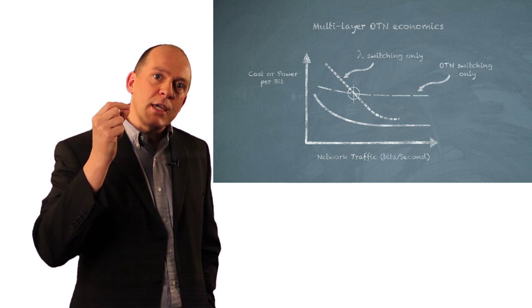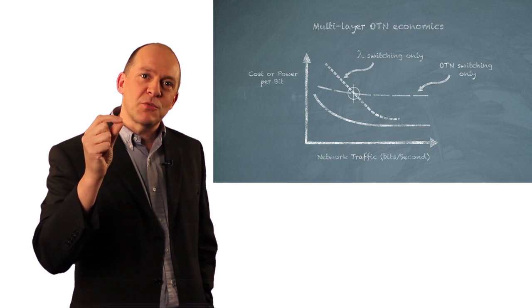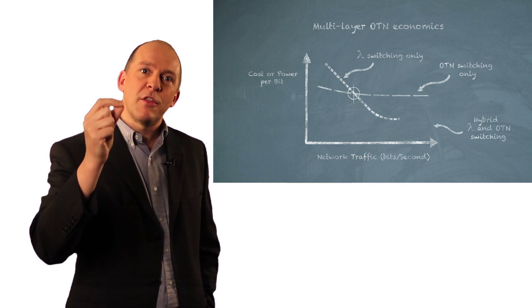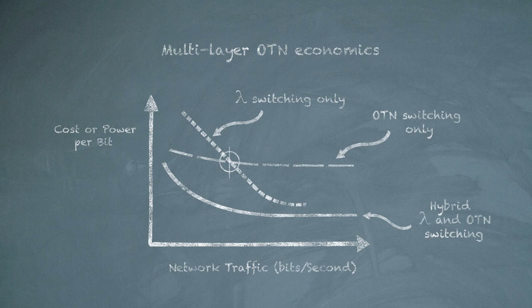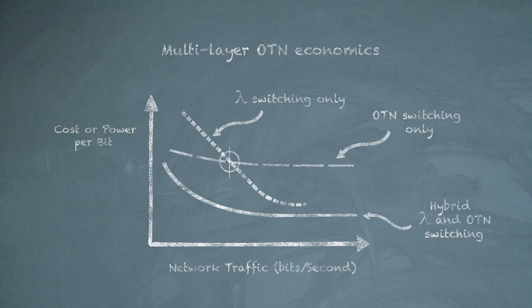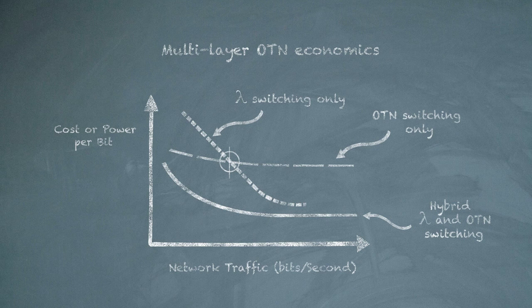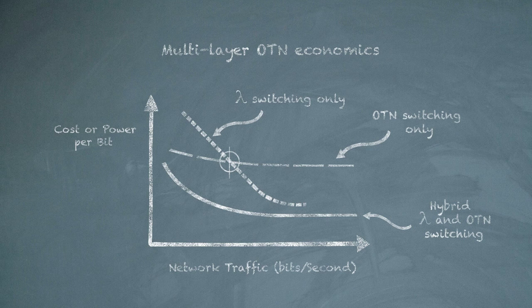But if you can combine the digital switching component with the photonic routing switching component with a hybrid solution that is that joint photonic and digital OTN solution, you get that line along the bottom of the chart that always gives you that lowest cost envelope. So OTN is really important for making sure you get low-cost, low-power networks as your networks grow.